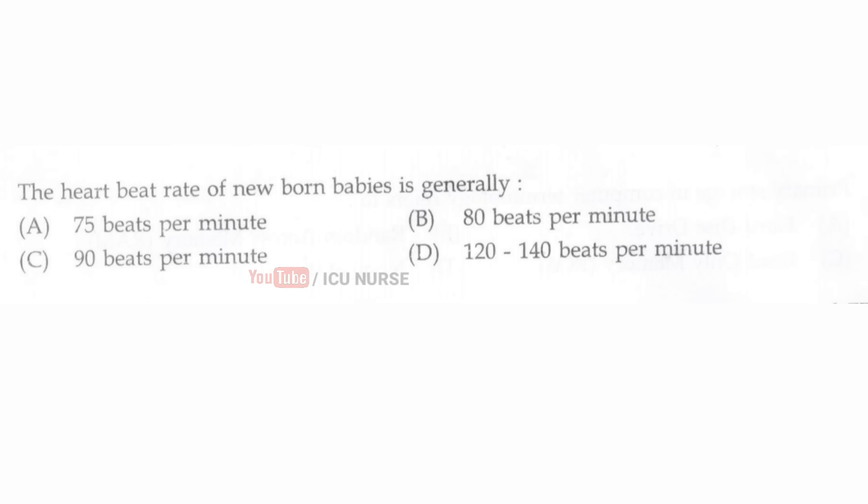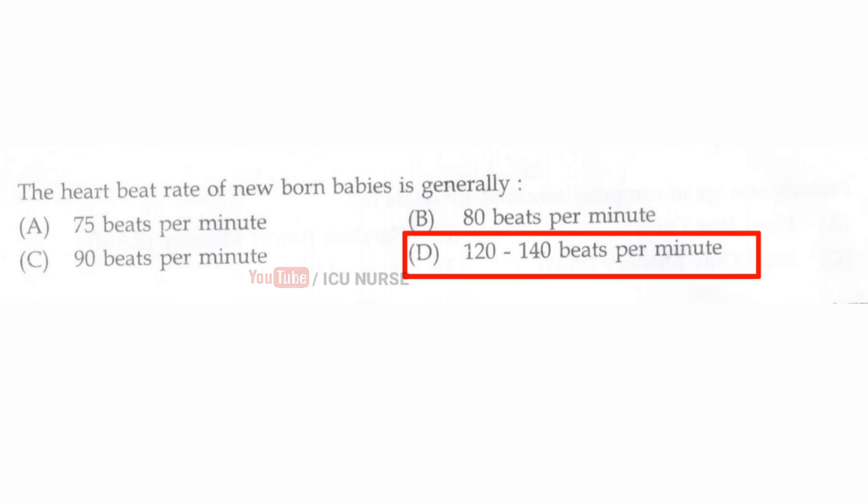The heartbeat of a newborn baby is generally — the correct answer is D — 120 to 140 beats per minute.